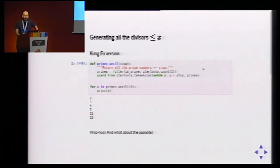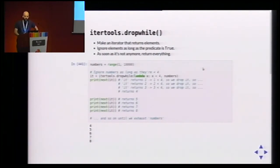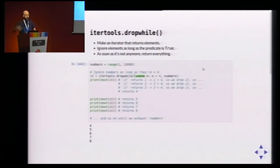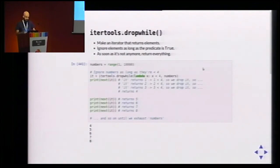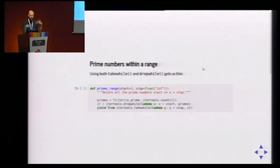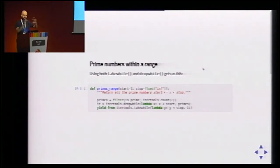The opposite of takewhile is dropwhile. dropwhile makes an iterator that ignores all elements that make the condition true. At some point the condition stops being true, and then it returns all remaining elements. For example, ignoring numbers as long as they're less than 4: we drop 1, 2, 3, but when we reach 4 it's not less than 4 so we return it and continue to the end. Combining both takewhile and dropwhile, we can write a function to get prime numbers within a range.